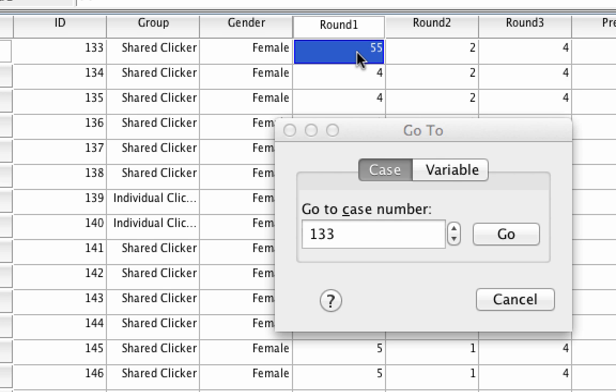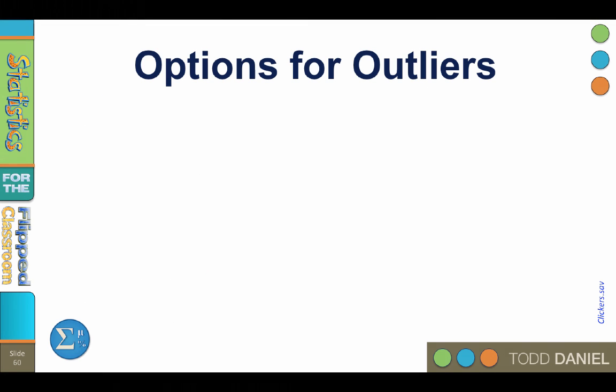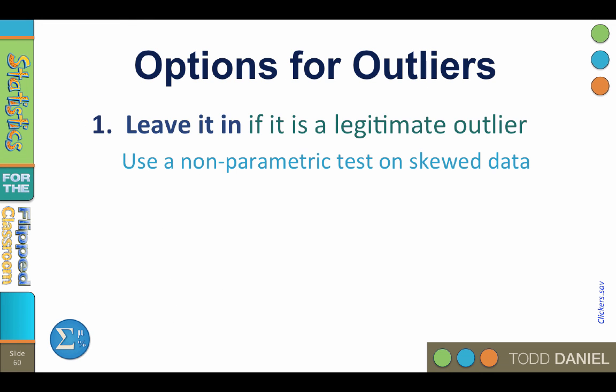Now some cases of outliers are legitimate, but in this case it's problematic because what we have here is a data entry error, and data entry errors are not legitimate outliers — they should be corrected. So what do we do with outliers? If it is a legitimate outlier, you may choose to leave it in. As we say, outliers are people too. So if one person really is 6'6", that is a legitimate height and we just have to include that really tall person in our data set. However, if the outlier skews the data set because it exerts too much leverage on the mean, then you may need to switch to non-parametric alternatives. Correct data entry errors if it can be determined what the accurate value should be.